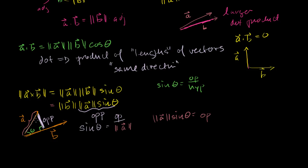So they're kind of opposite ideas: the dot product multiplies the part of a going in the same direction as b, times b; while the cross product multiplies the part of a going in the perpendicular direction to b, times the length of b. The length of the cross product is a measure of how perpendicular the two vectors are, while the dot product measures how much they move in the same direction.